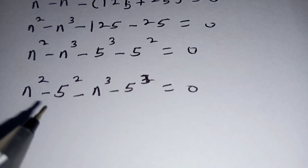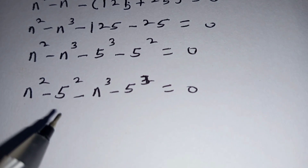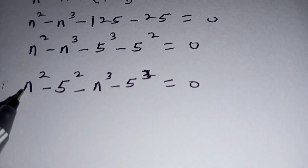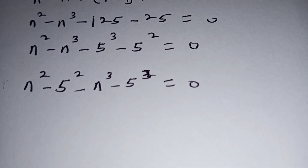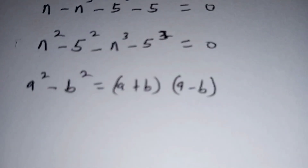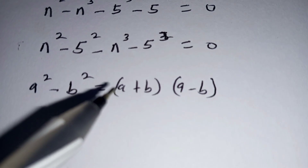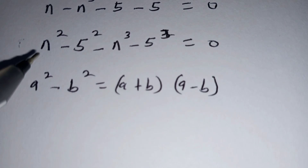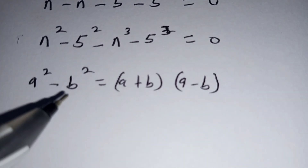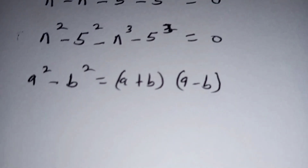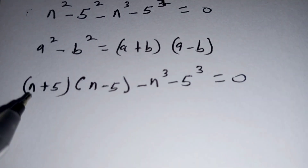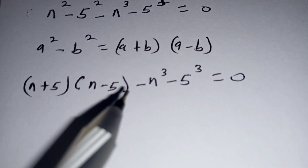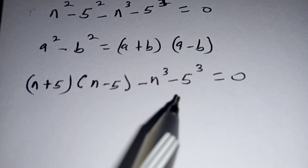At this point, we are going to use the difference of squares so that n squared minus 5 squared will use this identity. The difference of two squares is bracket a plus b multiplied by bracket a minus b. Our a is equivalent to n and our b is equivalent to 5. So rewriting this part, we obtain bracket n plus 5 bracket multiplied by bracket n minus 5 bracket, minus n cubed minus 5 cubed, is equal to 0.